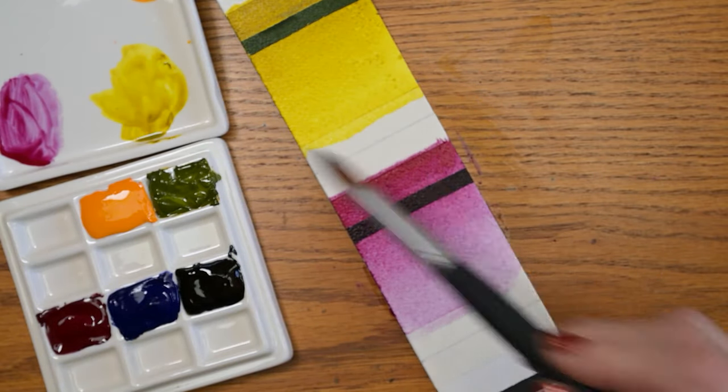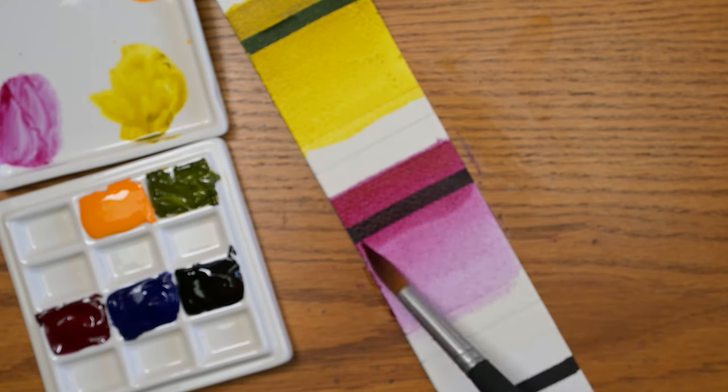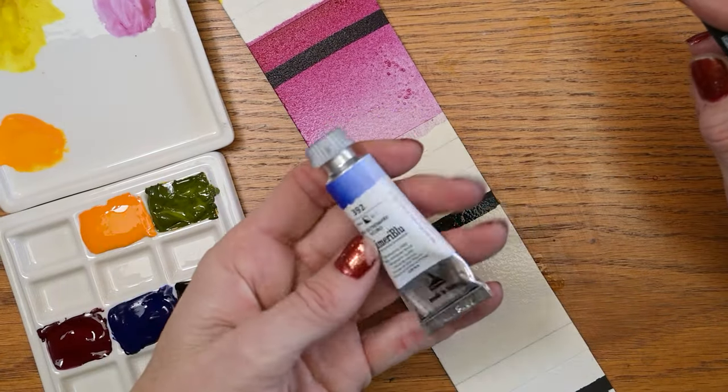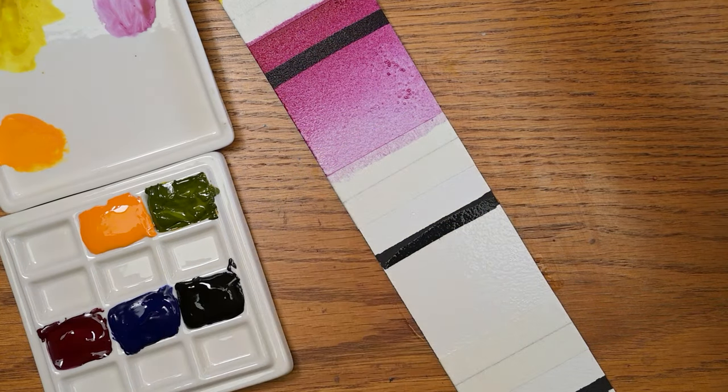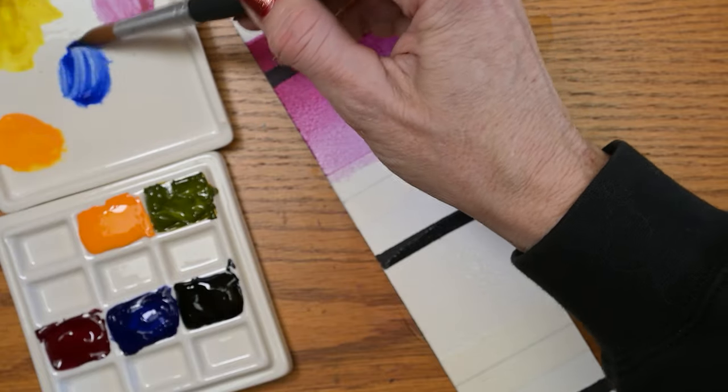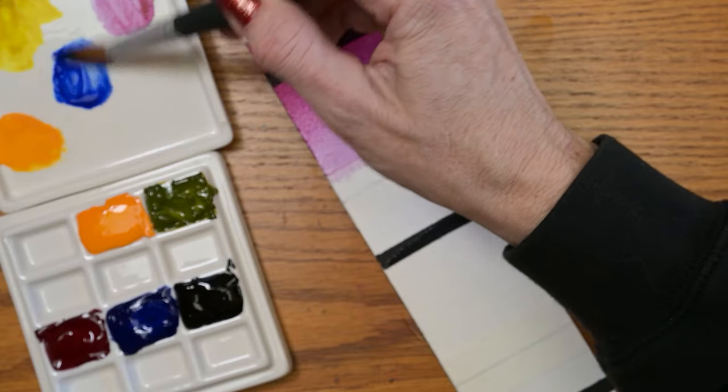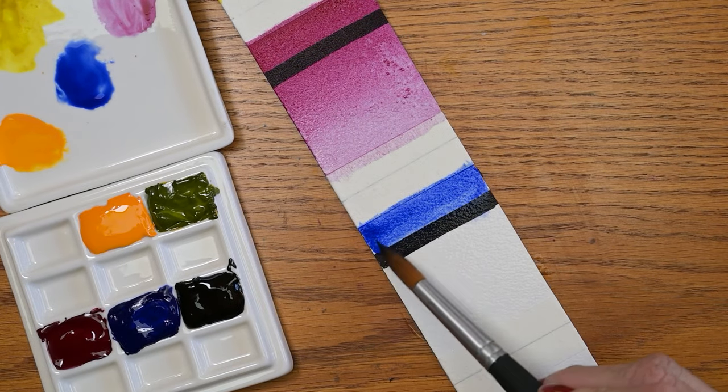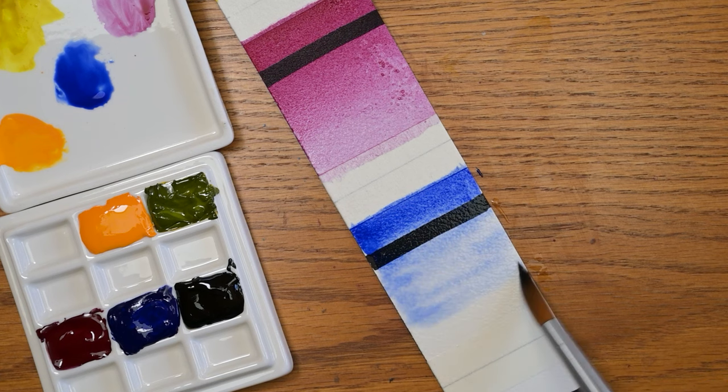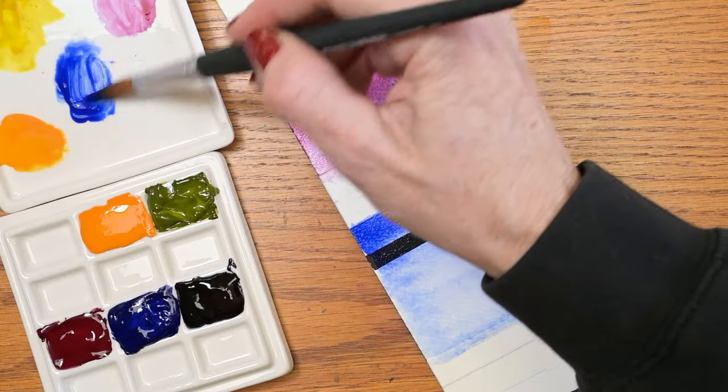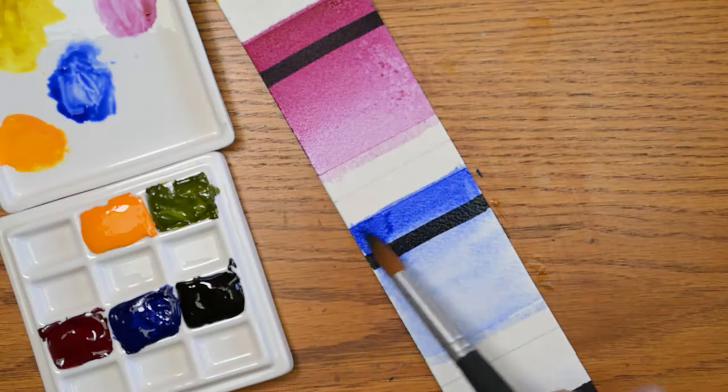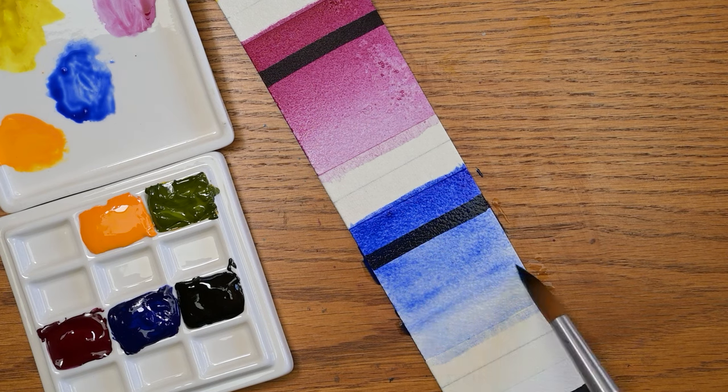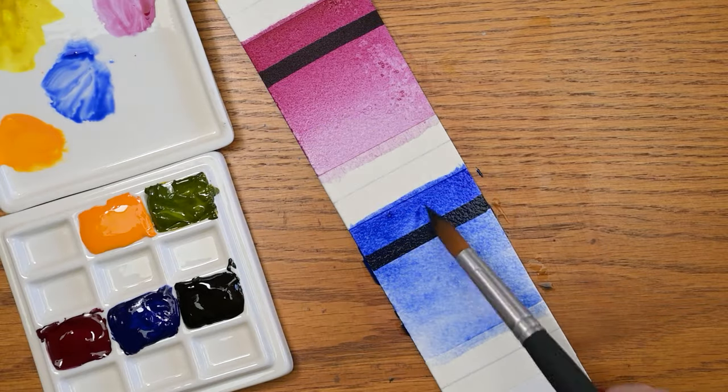Here we have ultramarine deep, three-star lightfast rating, PB29, and it is staining. That one is already starting to set up in the palette, which means maybe they'll dry out quickly enough that we can use them in a painting, not in their wet form. See, it just feels like you use more paint when they're wet than when they're dry, which I don't know, it's not super logical, but I'm pretty sure it's true.